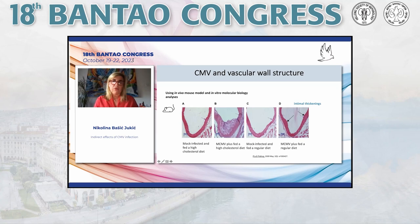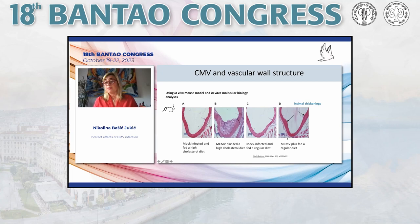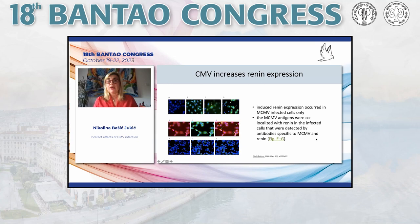One elegant experimental study compared mock-infected and high-cholesterol-fed mice with CMV-infected animals. Vessel wall analysis showed that the CMV-positive animal fed a high-cholesterol diet had a pronounced atherosclerotic plaque, compared to a mock-infected animal on a regular diet with a normal vessel wall. Importantly, the animal with CMV infection on a regular diet already showed intimal thickening — demonstrating an effect of CMV alone, independent of diet.